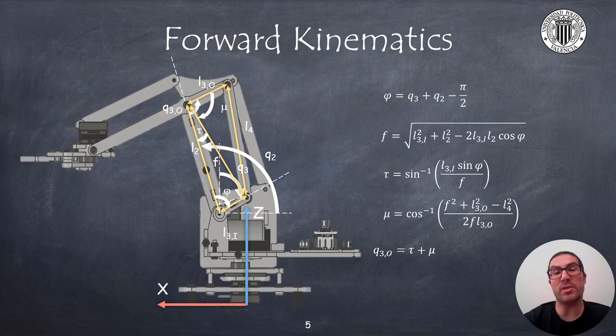Also, using the cosine theorem, we can compute the angle mu, which implies that now we can compute the angle q3o that was required in the previous formulas.